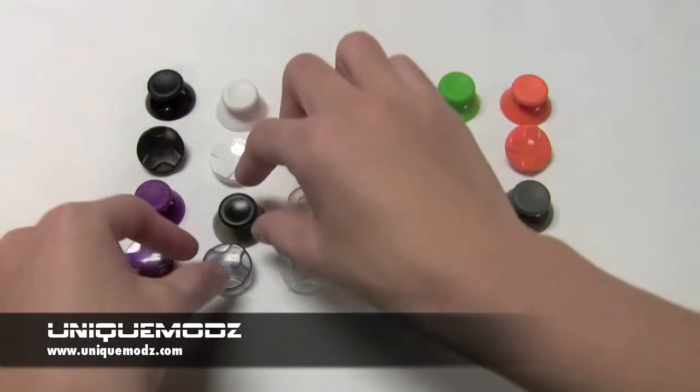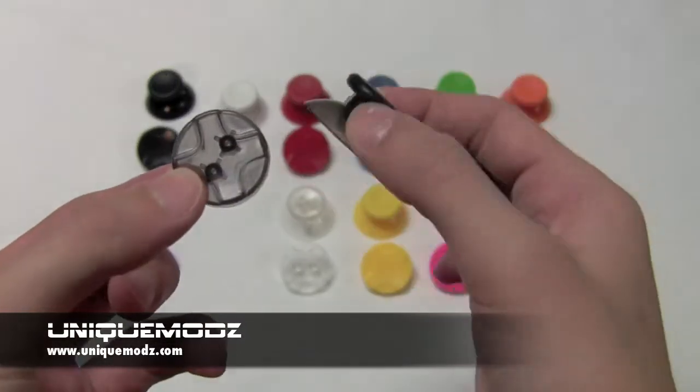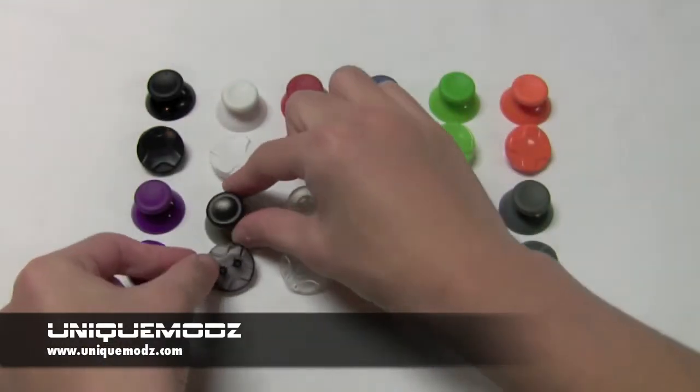So we're just going to go through and show you some different colors so you can see what they look like on some designs. These are smoke black ones. They're personally my favorite on the carbon fiber design.